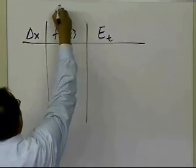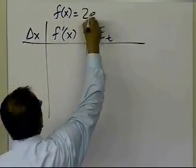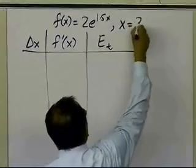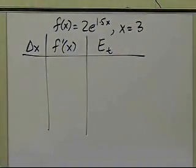So this is for the same function, f of x equal to 2 e to the power 1.5 x, and x is 3, that's what we're calculating this derivative of the function.